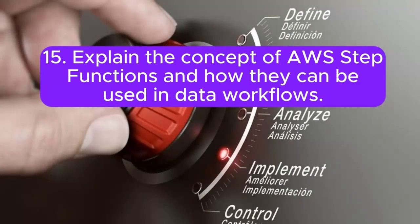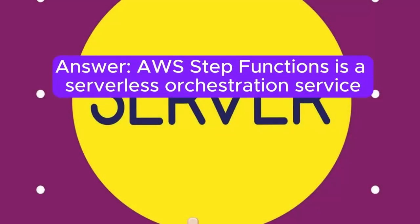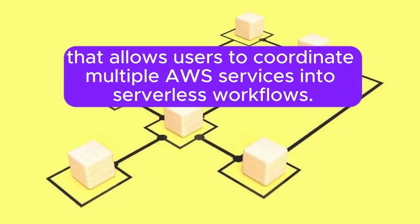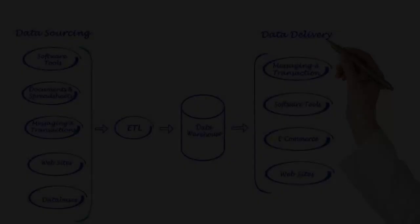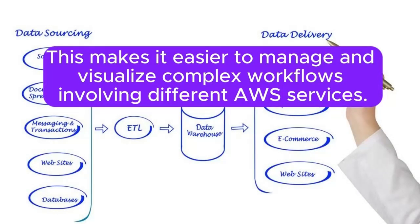15. Explain the concept of AWS Step Functions and how they can be used in data workflows. Answer: AWS Step Functions is a serverless orchestration service that allows users to coordinate multiple AWS services into serverless workflows. In data workflows, Step Functions can be used to define and execute multi-step data processing tasks, making it easier to manage and visualize complex workflows involving different AWS services.